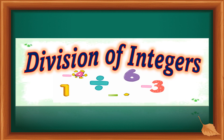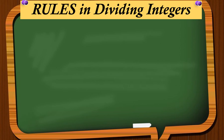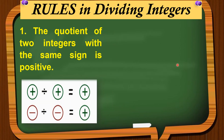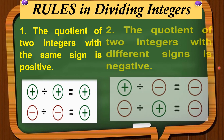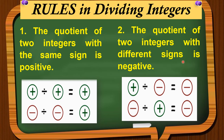Now let's move on to division of integers. The rules in dividing integers are the same as the rules in multiplying integers. The first rule: the quotient of two integers with the same sign is positive. The second rule: the quotient of two integers with different signs is negative. So positive divided by negative is negative, and negative divided by positive is also negative.